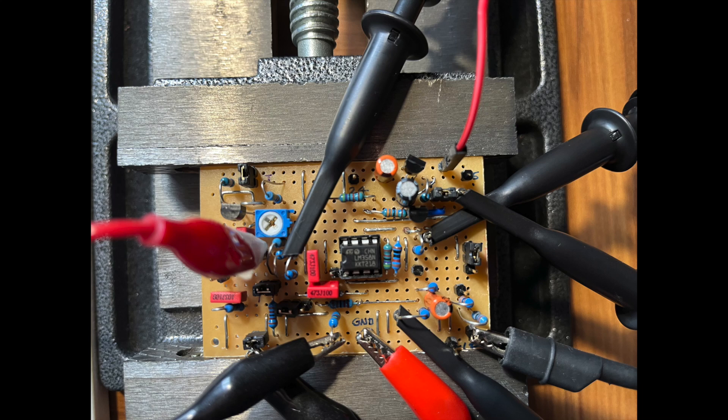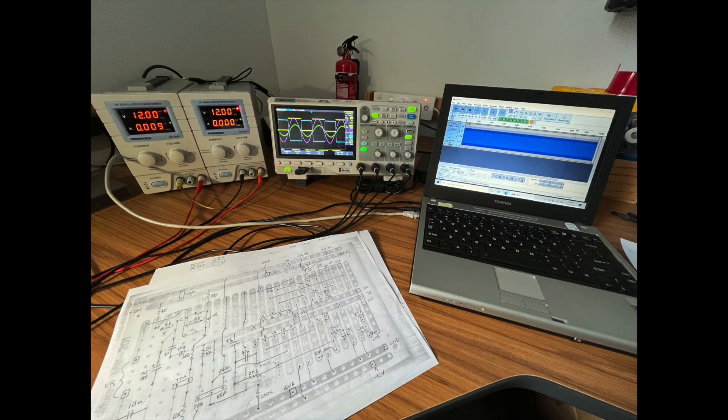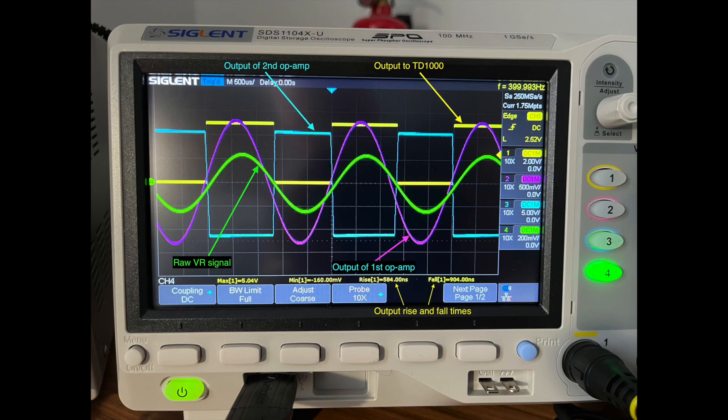For bench testing, I'm using a laptop as a sine wave source since I don't own a function generator. At 400 hertz, the square wave output has excellent rise and fall times of under one microsecond. Note the color assignments for each signal.